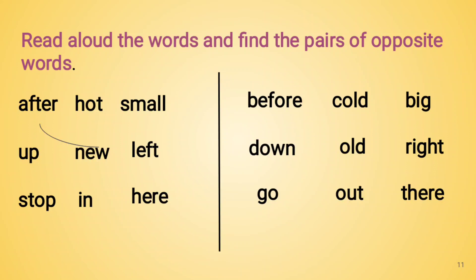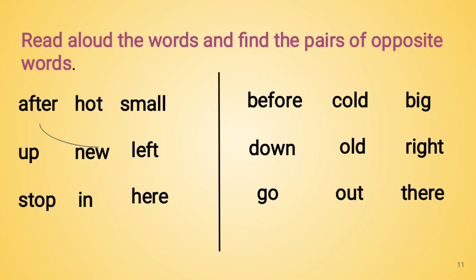Now we have to find the pairs of opposite words. The opposite word for after is before. Next is hot — the opposite word for hot is cold. The next word is small — the opposite word for small is big. Children, with the help of this, you are going to write down all these pairs in your English notebook.